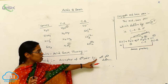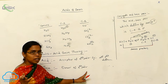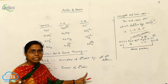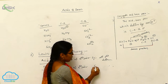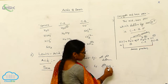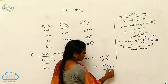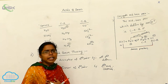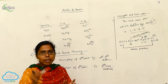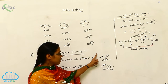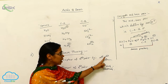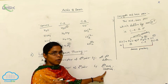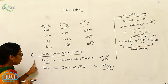Lewis bases are electron-rich compounds — compounds where the electron density is more. Examples include anions, which have a negative charge indicating more electrons, and compounds which have a lone pair of electrons. Those belong to Lewis bases.